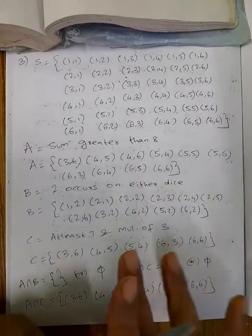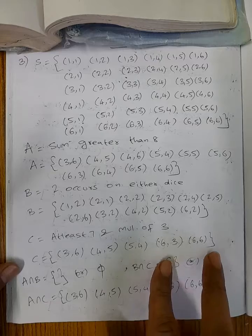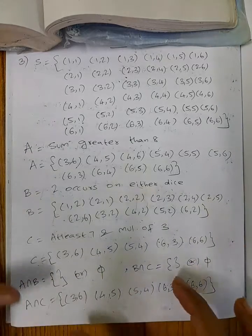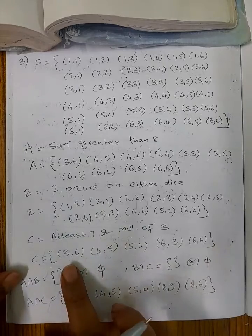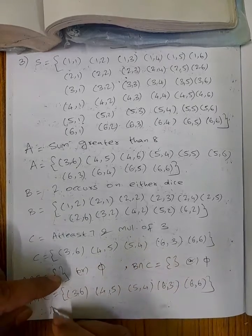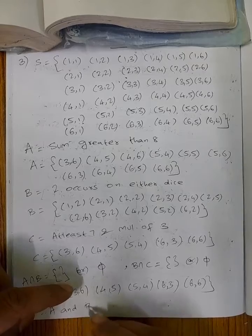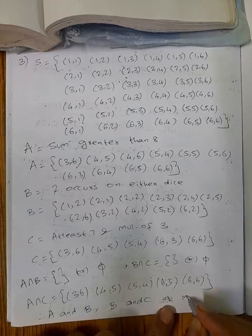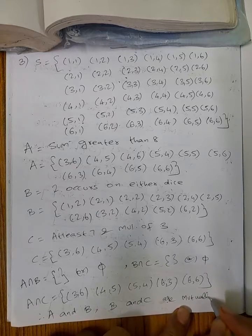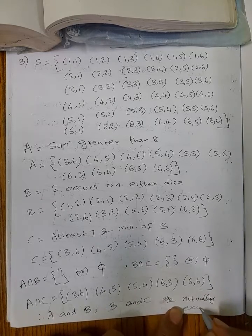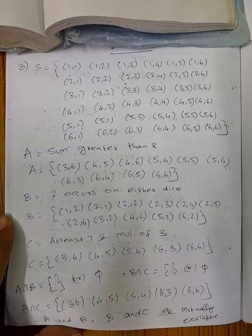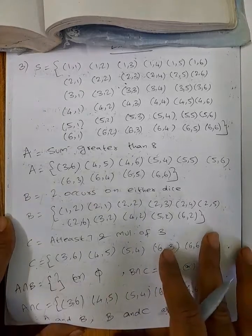For A intersection C: (3,6), (4,5), (5,4), (6,3), (6,6) are common to both A and C, so A∩C is not empty. Therefore A and B are mutually exclusive, B and C are mutually exclusive, but A and C are not mutually exclusive.